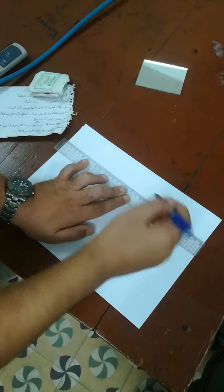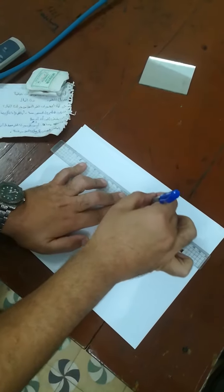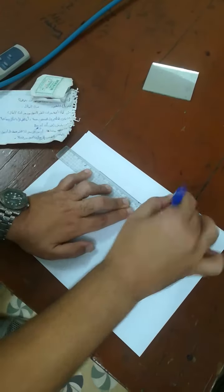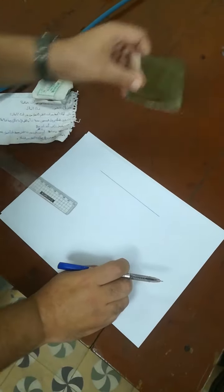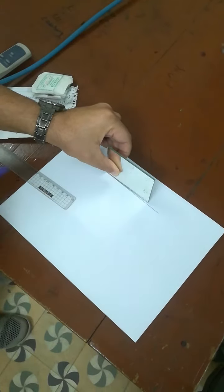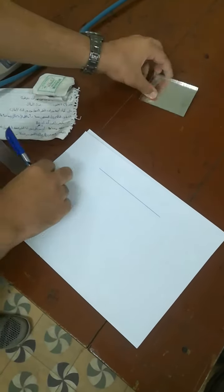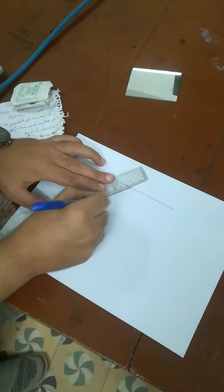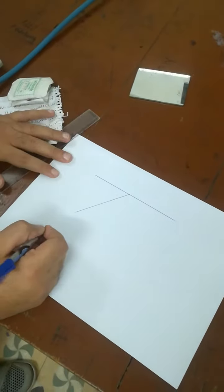Our practical activity today is about light reflection. First, we start to draw a line. This line will be the position of the mirror, which is a plain mirror. Then we try to draw the second line.